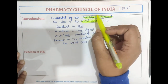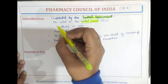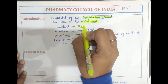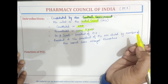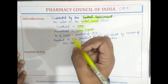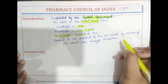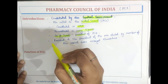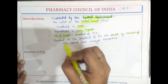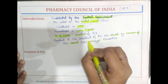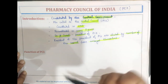So Pharmacy Council of India, PCI or Central Council, is constituted by the Central Government. It is constituted in 1949 and reconstituted every 5 years. Dr. B. Suresh is the President of PCI, and the President and Vice President of PCI are elected by the members of the Council from amongst themselves. Now coming towards the functions of PCI.